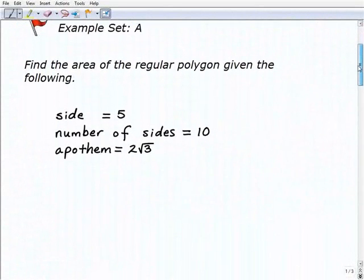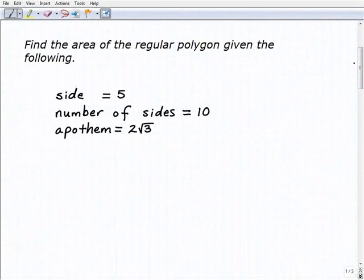This first exercise is really just to get you comfortable using the formula we talked about in the lesson. And that was the area of a regular polygon is equal to one-half A times P, where A is the apothem and P is the perimeter.